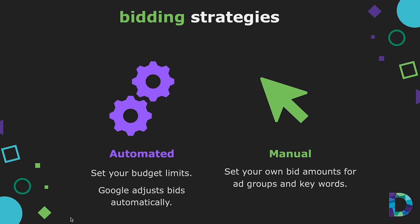Google Ads is primarily based around bidding on keywords. There are two options: automated and manual. In automated bidding, Google automatically adjusts your bids based on your competitors — after defining your maximum budget, Google will try to give you the best chance at winning the bid within your defined parameters. In manual bidding, you set bid amounts for your ad groups and keywords, giving you control to reduce ad spend on lower-performing ads.